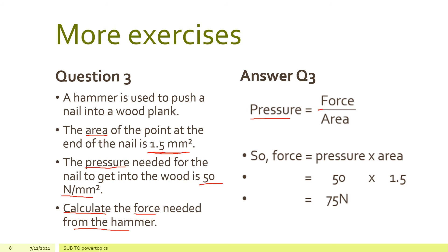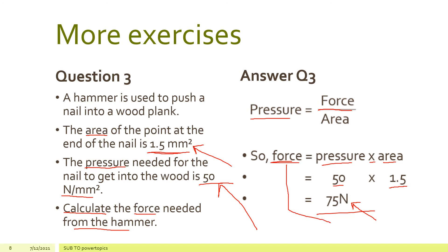Pressure is equal to force over area, but here we have to calculate the force, so it's the reverse operation — multiplication. Force equals pressure multiplied by area. The pressure is 50 Newton per mm² and the area is 1.5 mm². When we multiply, we get 75 Newton. The unit is Newton because they asked us to give the force, and the unit for force is Newton.